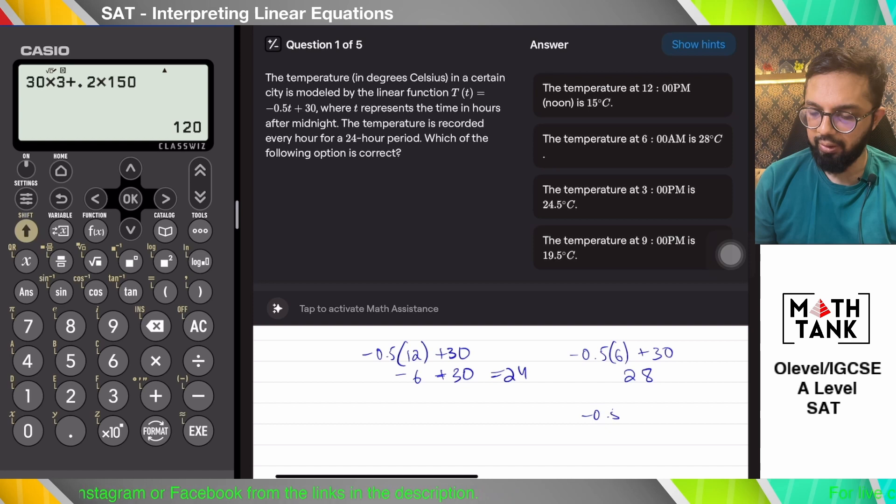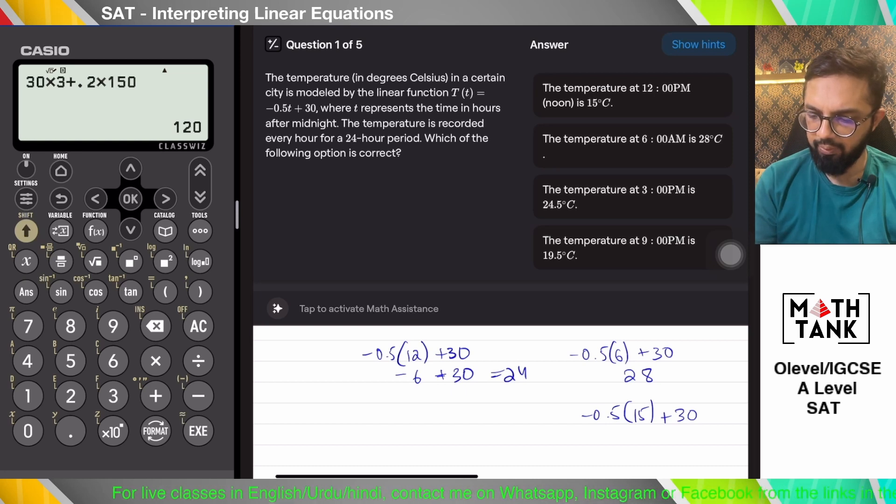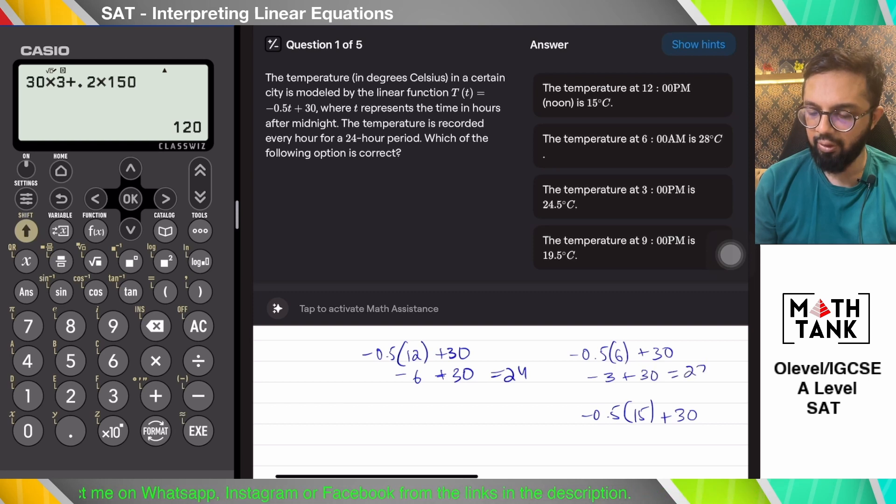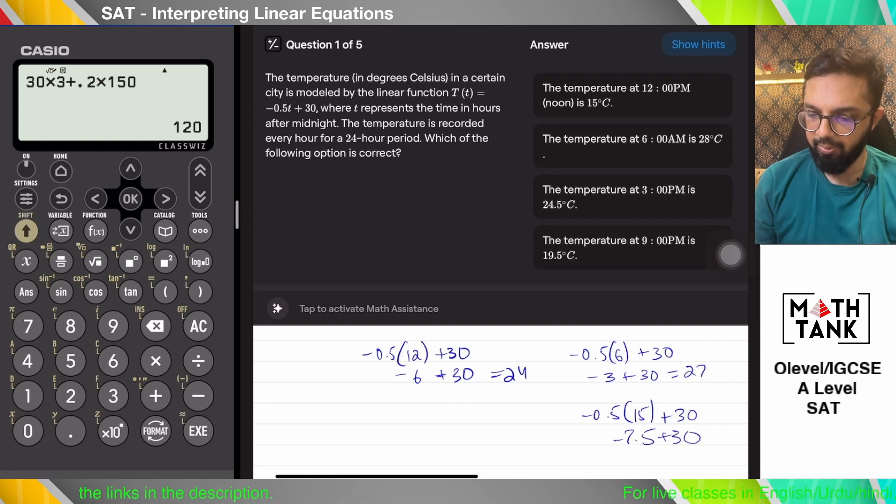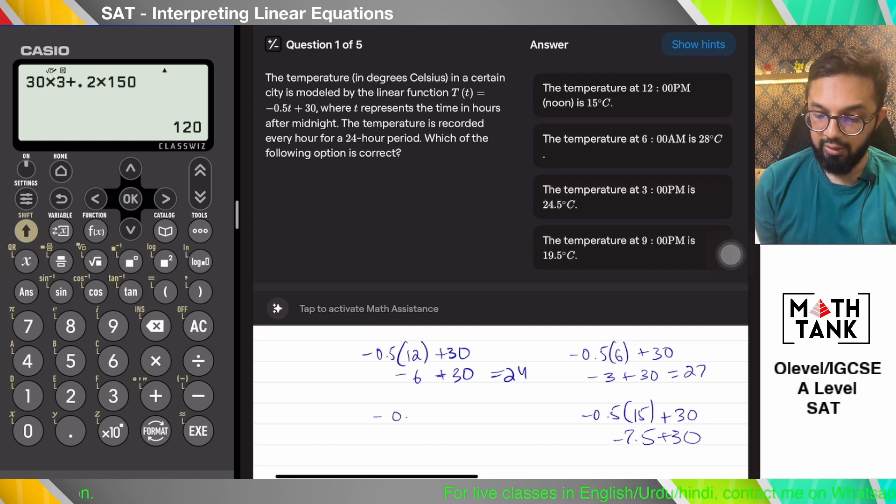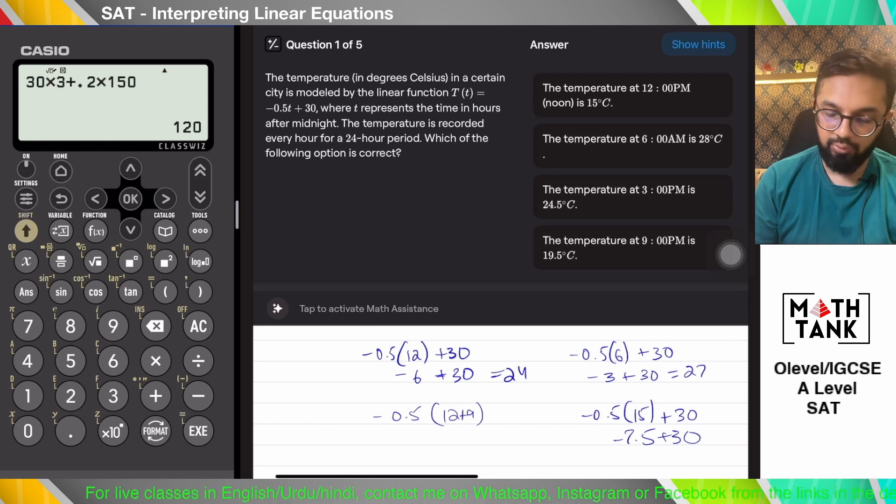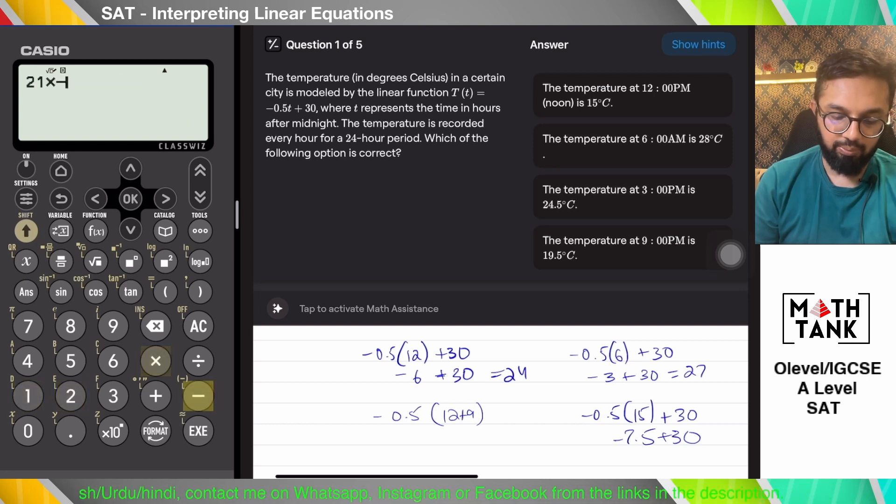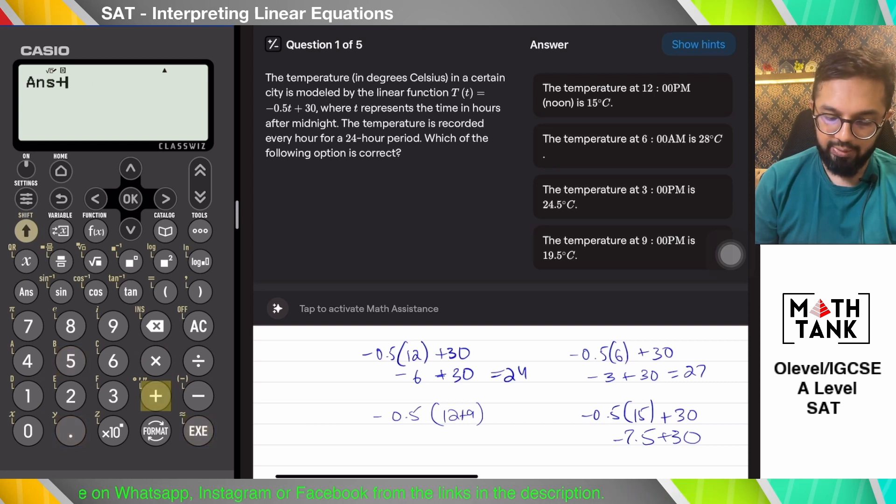Then minus 0.5 times 15 for 3 PM should be 24.5. 0.5 times 6 is 3, minus 3 plus 30 that's 27, not 28. Minus 7.5 plus 30 should be 22.5. What about 9 PM? 9 PM is how many hours? 12 plus 9 is 21. 21 times minus 0.5 plus 30. I think that should be the right answer, 19.5.